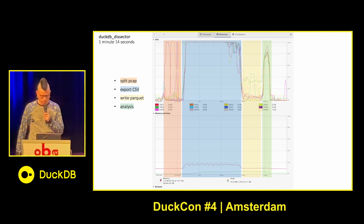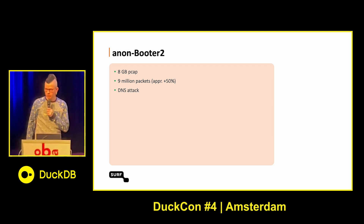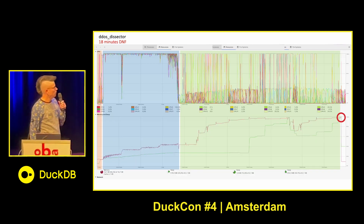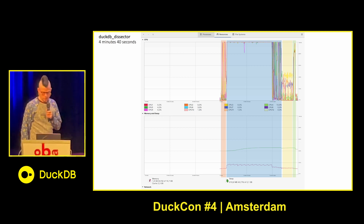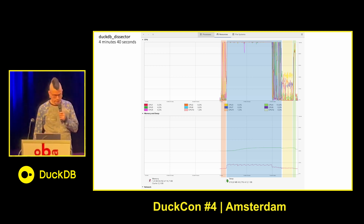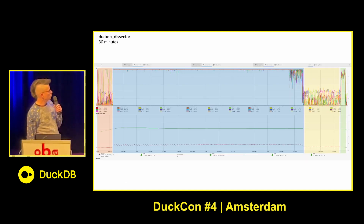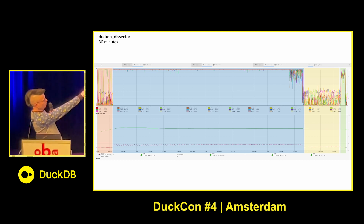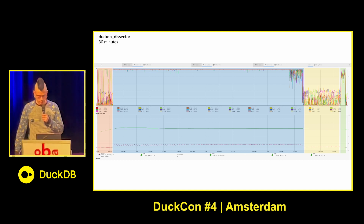Translating to parquet is the biggest memory usage, actually. With a dataset 50% bigger in packets, the original DDoS sector takes 18 minutes to crash, and the DuckDB version does it in 4 minutes 40 seconds — again with low memory usage and very fast analysis. With a dataset four times as big, it takes 30 minutes total. But if you look at the analysis, that's the small squiggle at the end — only 30 seconds. It's the translating into parquet that takes the most time.